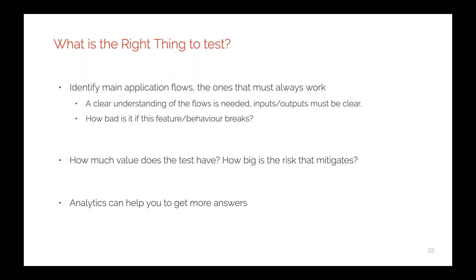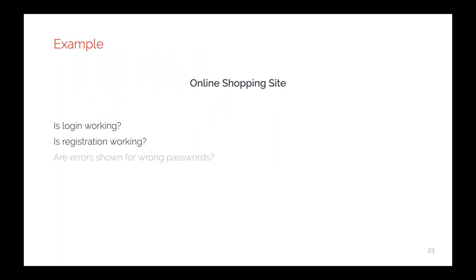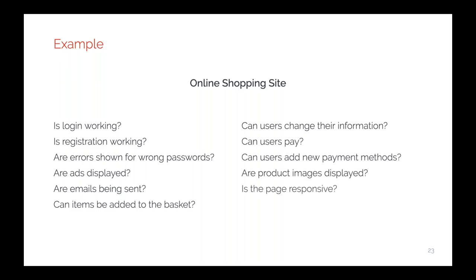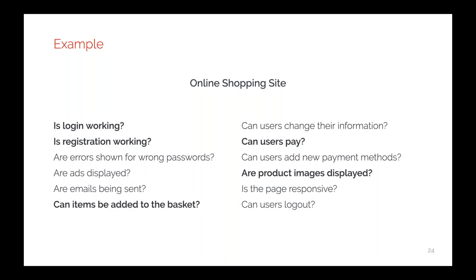If it's hard to get answers to those questions, we can use analytics. For example, for an online shopping site, the list of things to test could be endless — checking if emails are sent, if users can pay, if the page is responsive on different devices. But if we want to prioritize: users should always be able to log in, people should always be able to register, people should always be able to pay, and product images should always be displayed. We should prioritize and see which ones give us more value when tested automatically.